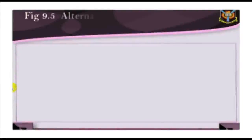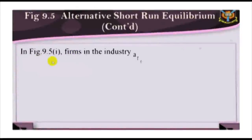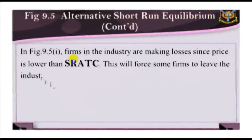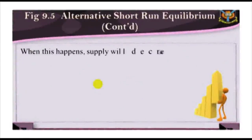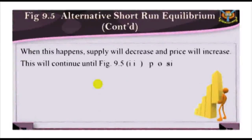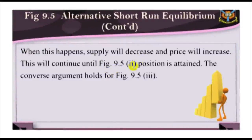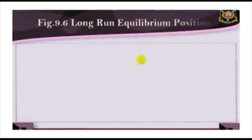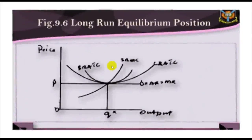These three situations are illustrated as follows. In Figure 9.5a, firms in the industry are making losses. Since price is lower than the short-run average total cost, this will force some firms to leave the industry. When this happens, supply will decrease and price will increase. This will continue until Figure 9.5b's position is attained. The converse argument holds for Figure 9.5c. In the long-run equilibrium situation, three distinct features are obtained: no firm will want to vary the output of its existing plans.